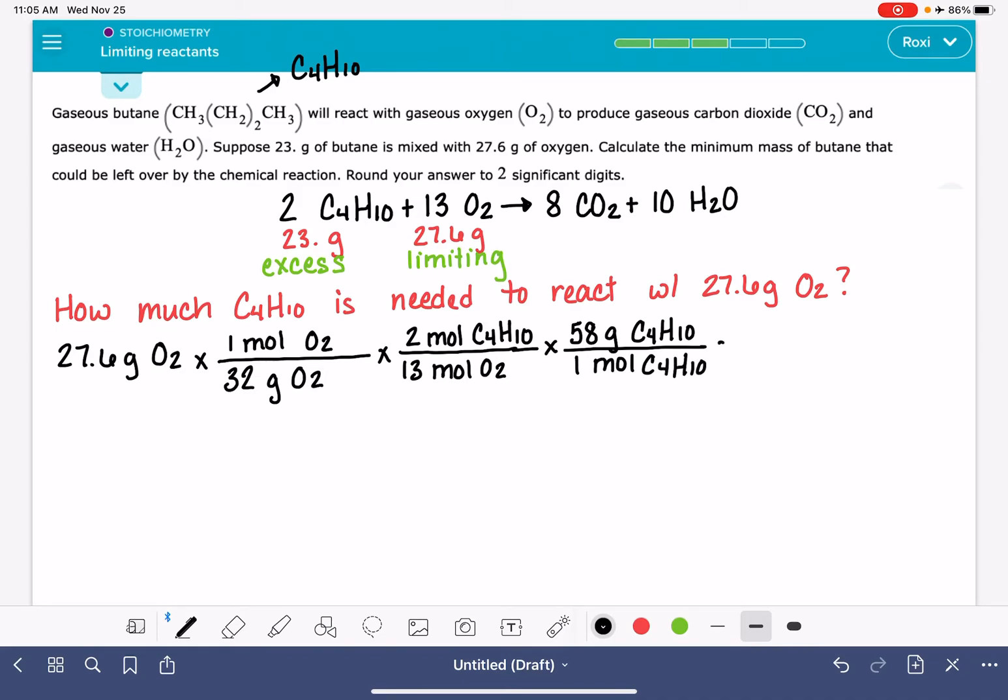And again, what we're figuring out here is how much of this butane is necessary to react with the 27.6 grams of O2. So I am using my calculator right now to get the math on this and I get 7.696 grams of C4H10. And that specifically, that is how much is actually needed in this reaction.